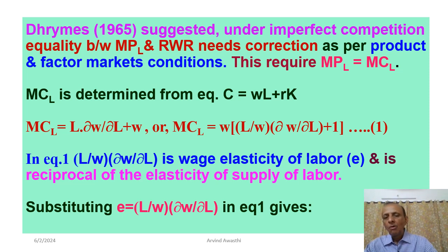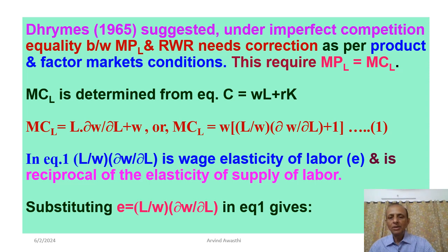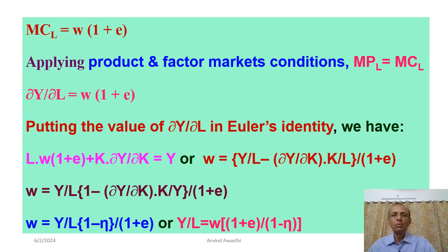W को common लेने पर: MCL = W into (1 plus L/W into delta W/delta L)। यह term delta W/delta L into L/W — यह wage elasticity of labor है, और wage elasticity एक तरह से reciprocal है elasticity of supply of labor की। इसको हमने symbol E से indicate किया है। तो MCL equal to W into (1 plus E)।